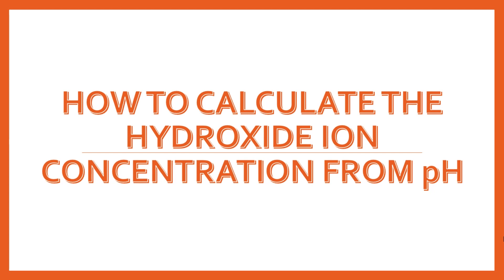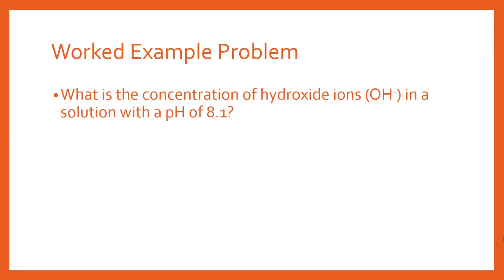In this video I'm going to teach you how you can calculate the hydroxide ion concentration from just the pH of the solution. So let's look at a worked example. The question is: what is the concentration of hydroxide ion — that's your OH minus ion — in a solution with a pH of 8.1?